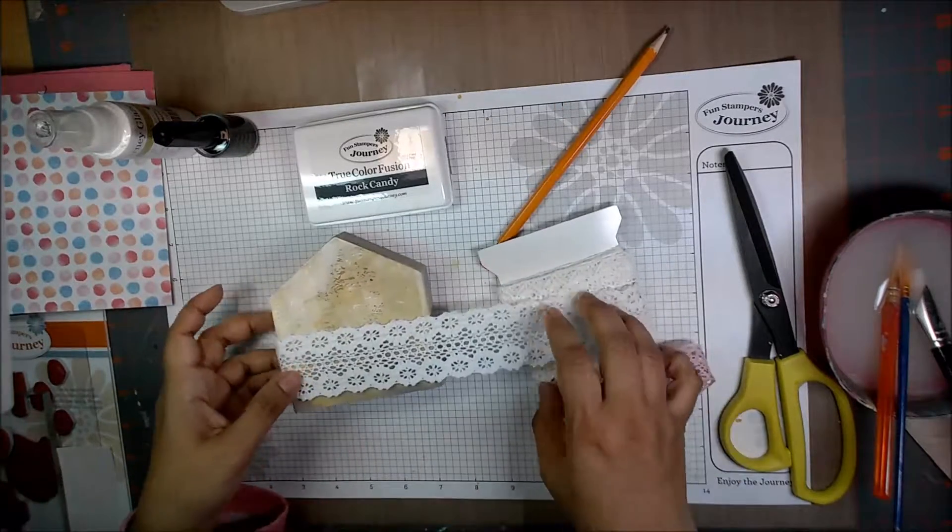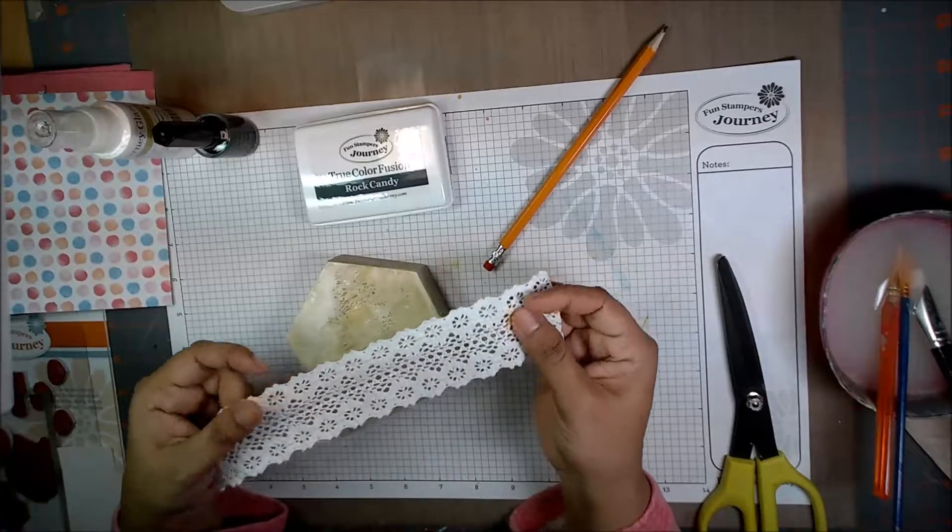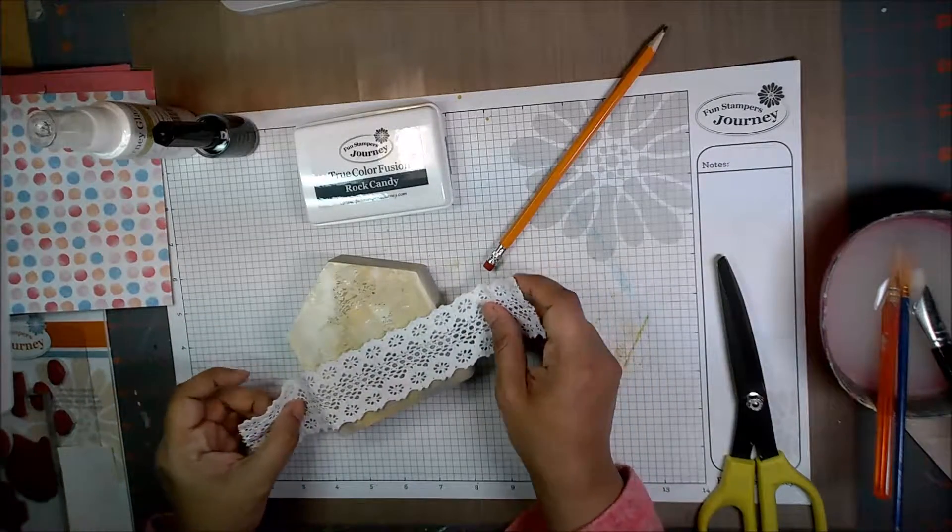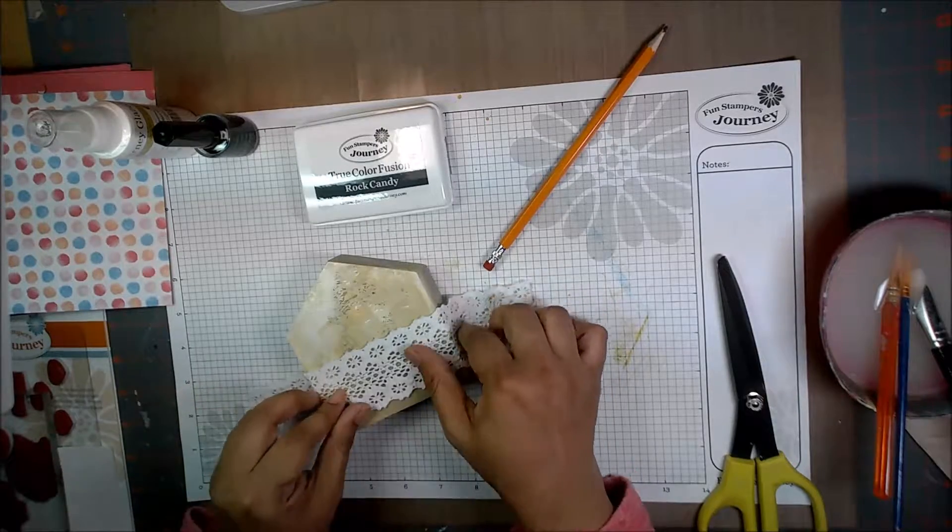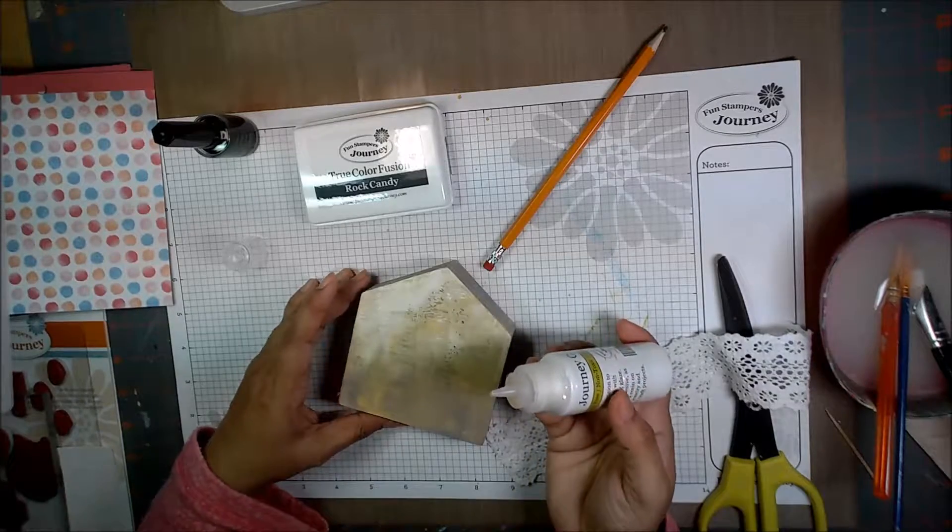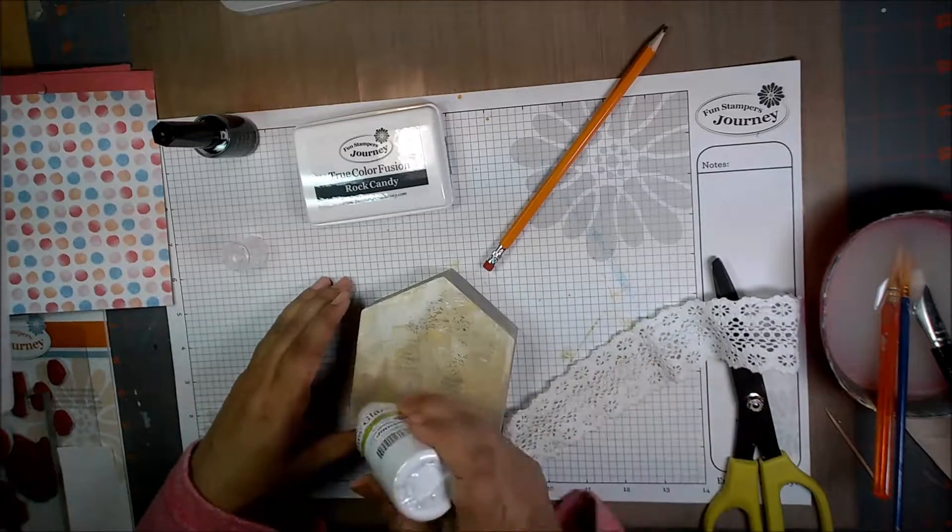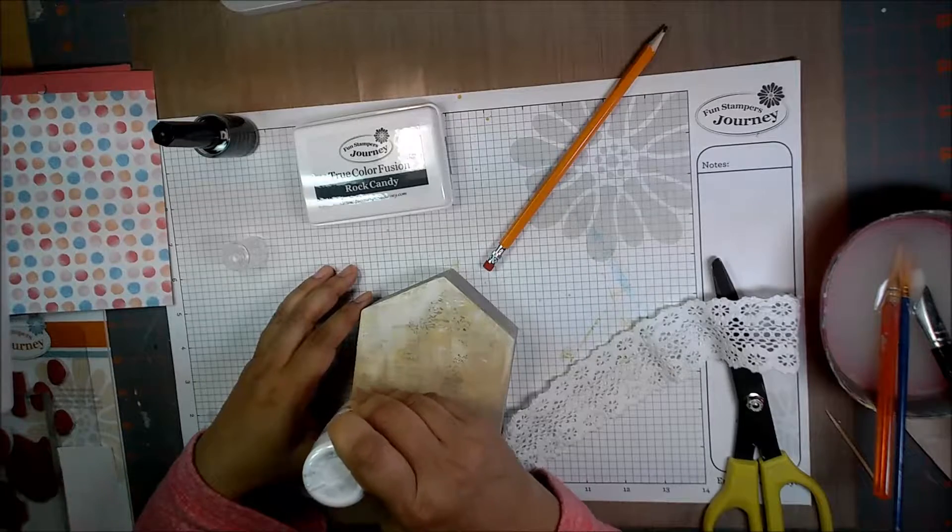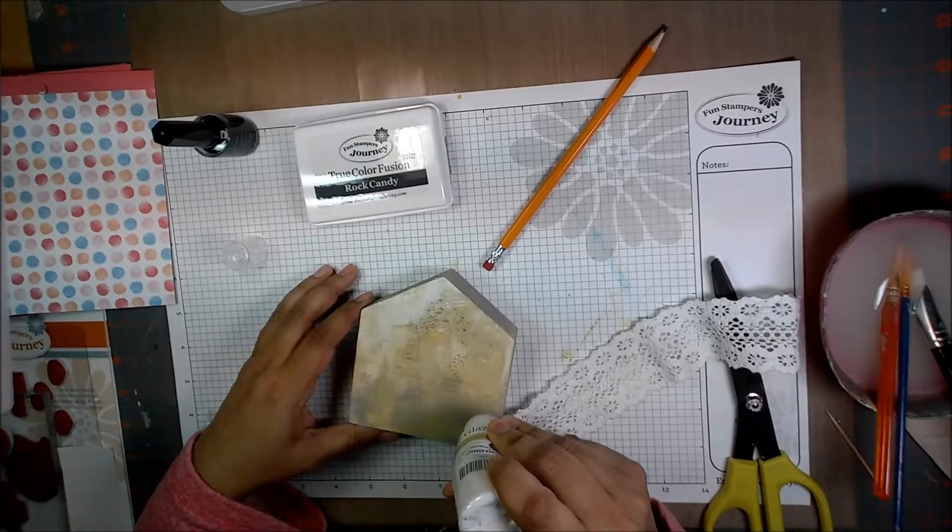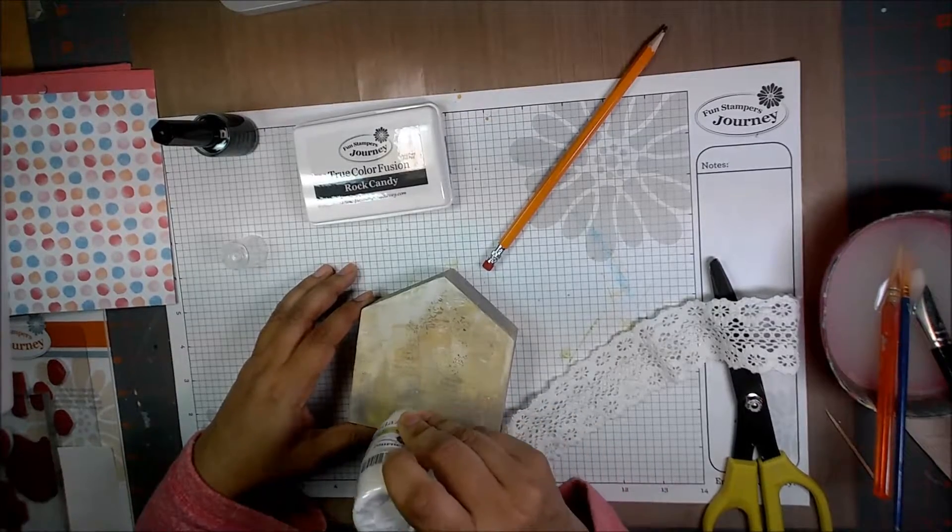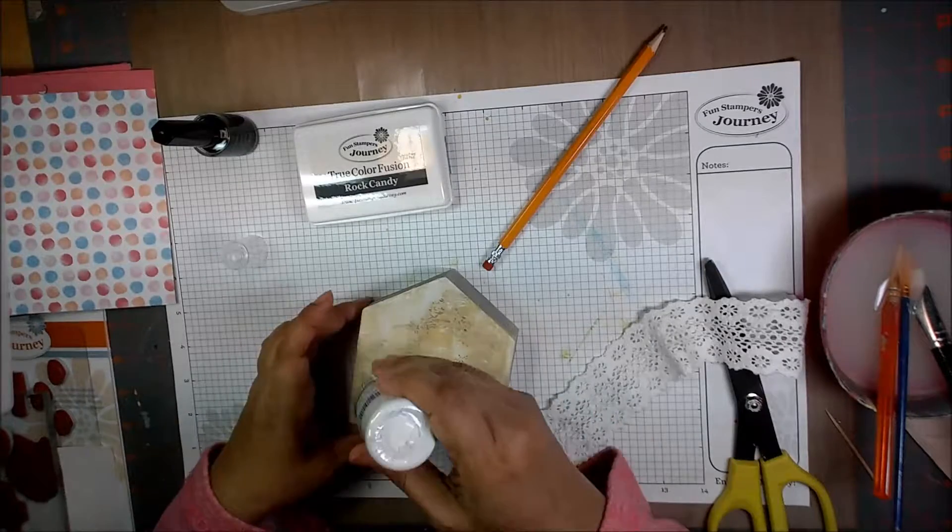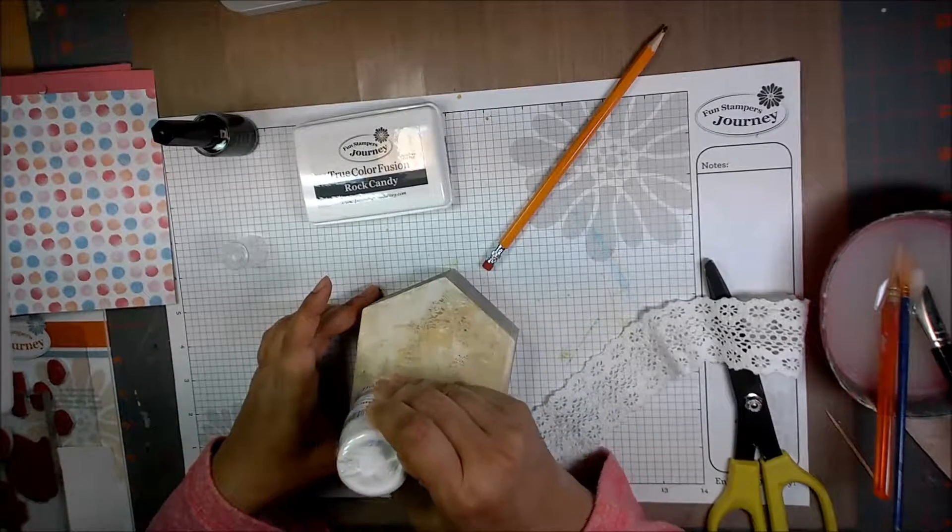This is not only pretty, it's a beautiful texture and I think it will add a lot to our little house here. So I'm gonna add my trim with some journey glaze. I don't want to put so much glaze that it starts to ooze out of the design, but enough to keep it secure.